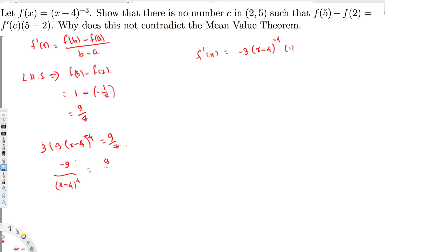We can rearrange this, so (x minus 4) to the fourth equals minus 9 over 9 times 8. The 9s cancel, so we get (x minus 4) to the fourth equals minus 8.